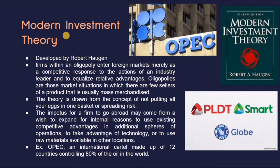Lastly, we have the modern investment theory — the fourth type of modern trade theory, developed by Robert Hagen. According to him, firms within an oligopoly enter foreign markets merely as a competitive response. Their real intention is just to compete — to show their rivals that they can keep up. This follows the actions of an industry leader and aims to equalize relative advantages.